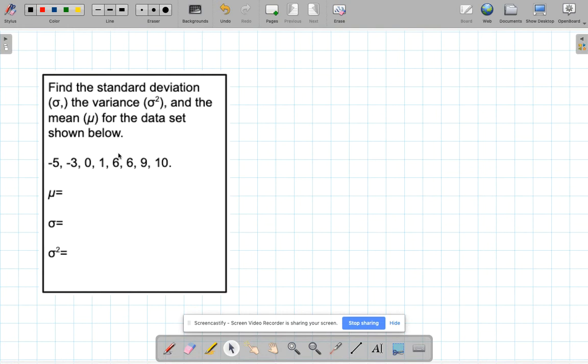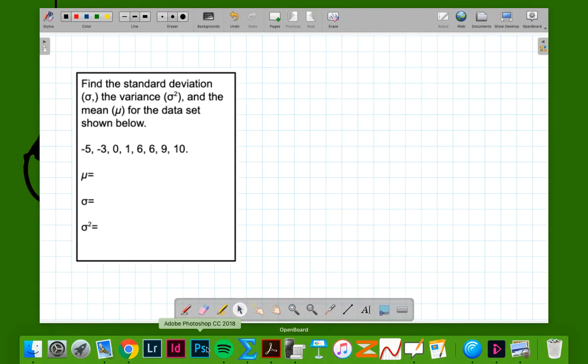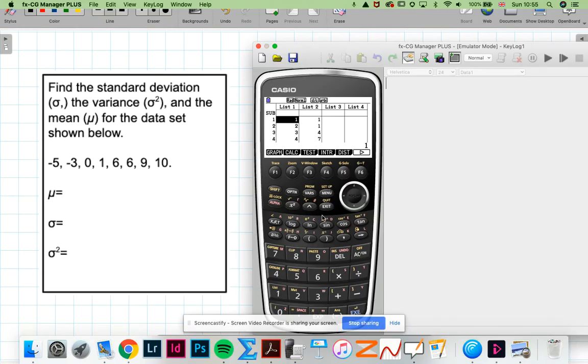So I've got a set of data here and I want to find the standard deviation, the variance and the mean. I'm going to use a graphic calculator, my Casio. So I'll get my Casio up here.